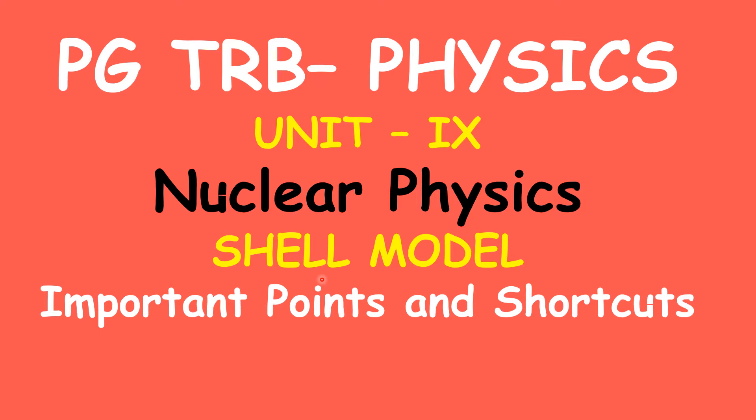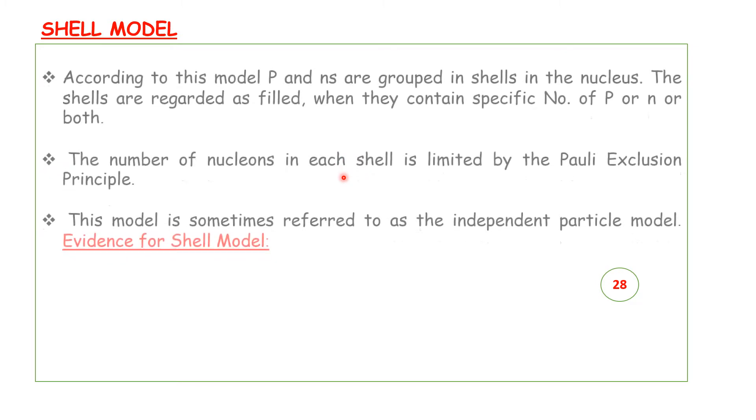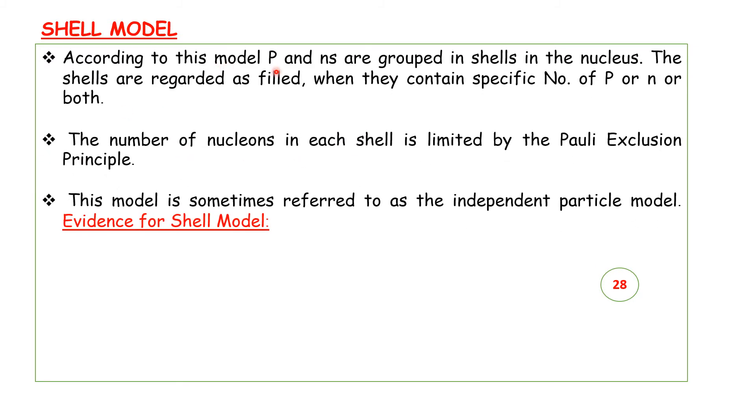Let us discuss the shell model. According to this model, protons and neutrons are grouped in shells in the nucleus. The shells are recorded as filled when they contain specific number of protons or neutrons or both.